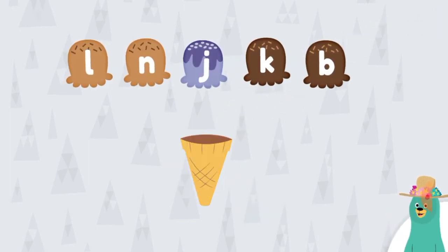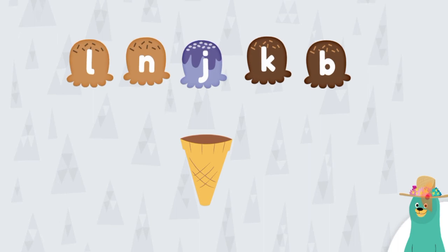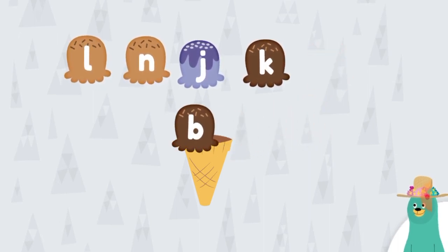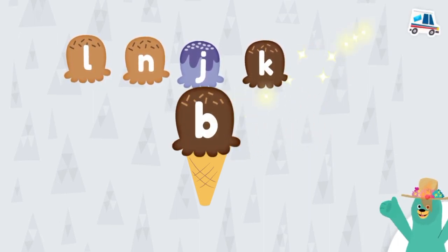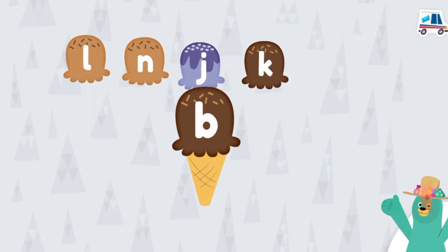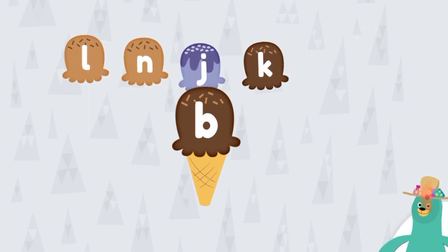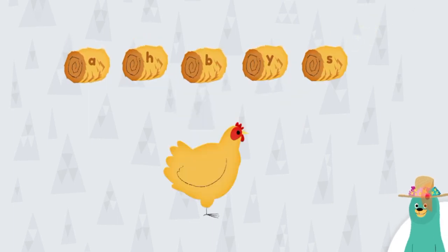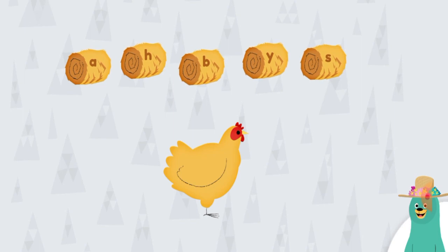Put the ice cream with the letter B on the cone. Nice work. Give the hen the hay with the letter S.